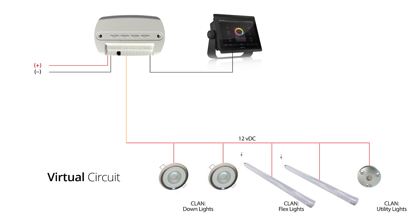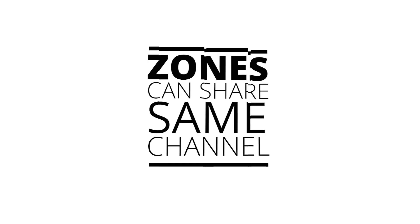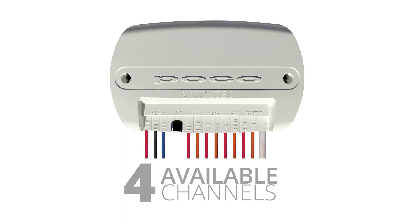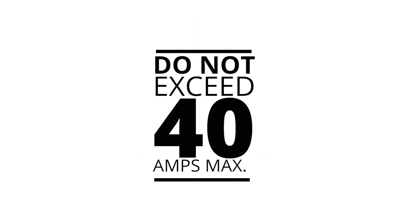This means you can put multiple light families on one channel, as long as you don't exceed the maximum amp draw of 10 amps per channel. Different lighting zones on your boat can therefore share the same channel, and the amp load from all zones can be distributed over the available four channels on the POCO module, as long as the maximum amp draw of 40 amps is not exceeded.